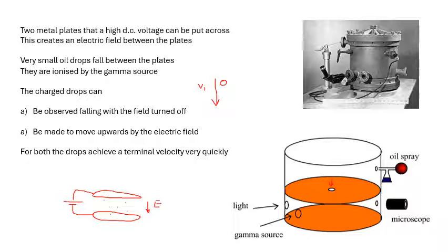Then we turn on the electric field, and what happens is that they move upwards, or the ones that we're interested in move upwards, and again with a certain terminal velocity v2 because now they're being pulled up by the electric field. So little tiny droplets of oil.